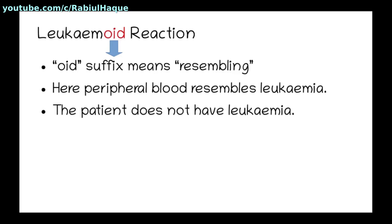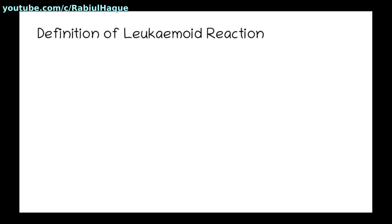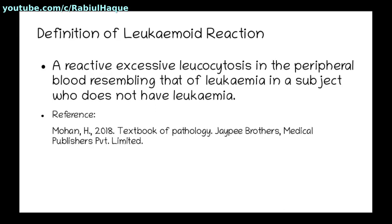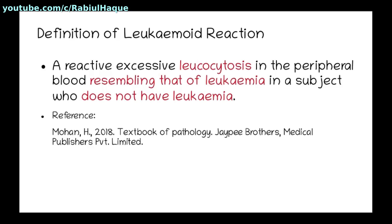But as we will see when we are doing bone marrow or other studies, this individual in fact does not have leukemia. So how can we define leukemoid reaction? Always remember, it can be defined as a reactive excessive leukocytosis in the peripheral blood resembling that of leukemia in a subject who does not have leukemia. The white blood cell count is high, however the patient does not have leukemia.